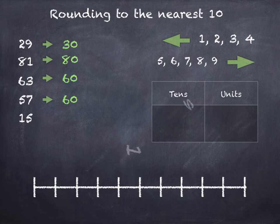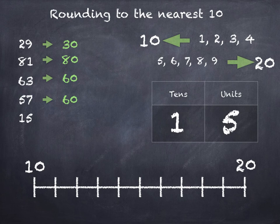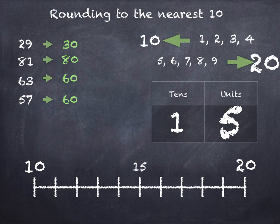And 15. 1 ten and 5 units. Sits between 10 and 20 on the number line, so we'll be either rounding down to 10 or up to 20. 5 units tells us that we round up to 20. Now if we look at 15 on the number line it actually sits right in the middle, but whenever there's a 5 we always round up.